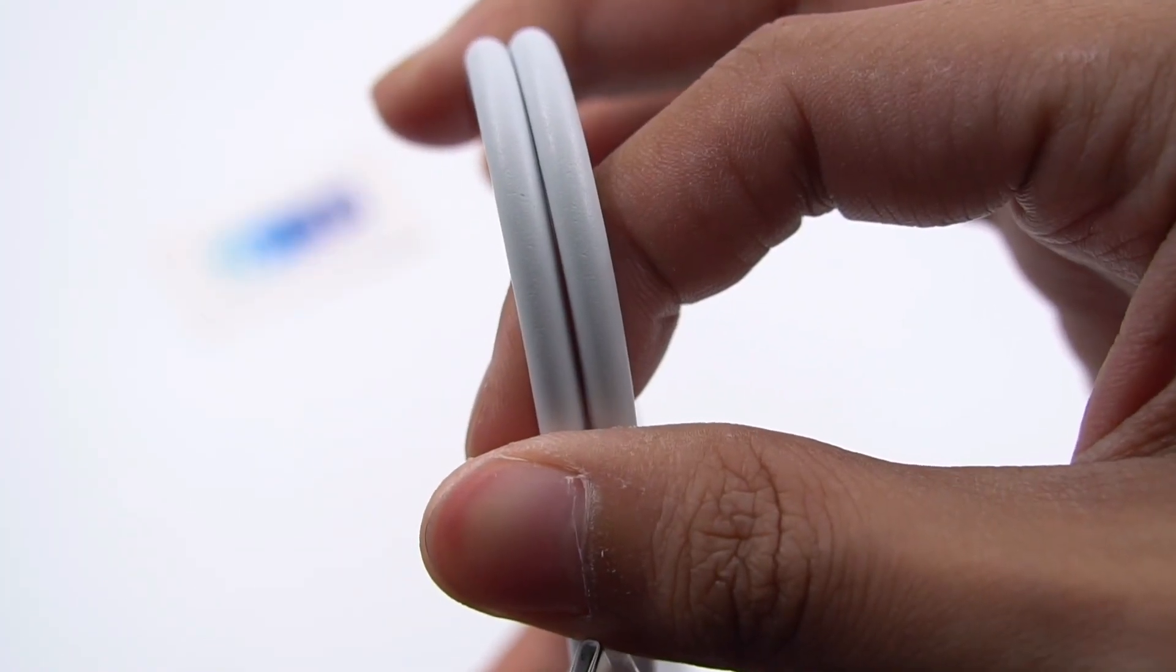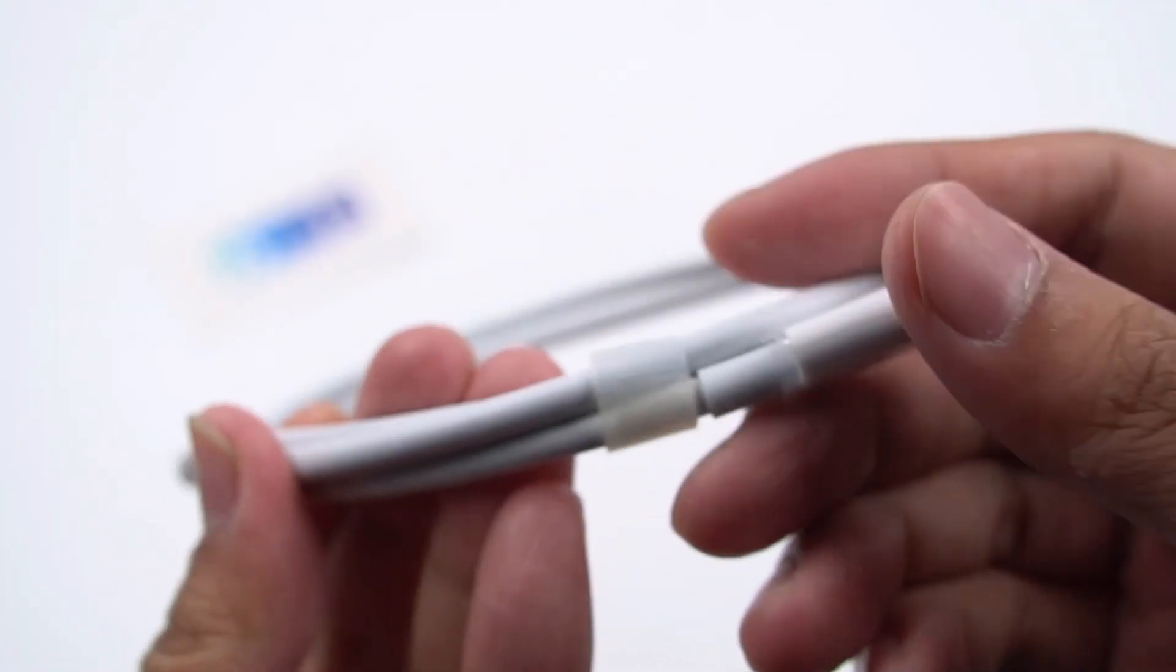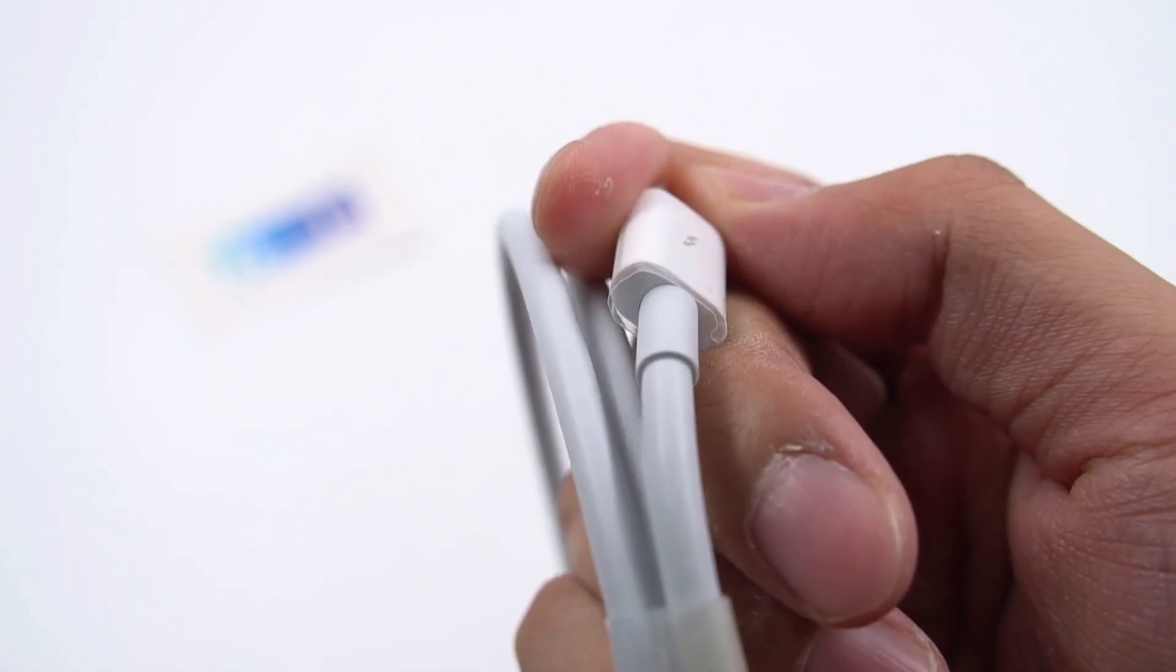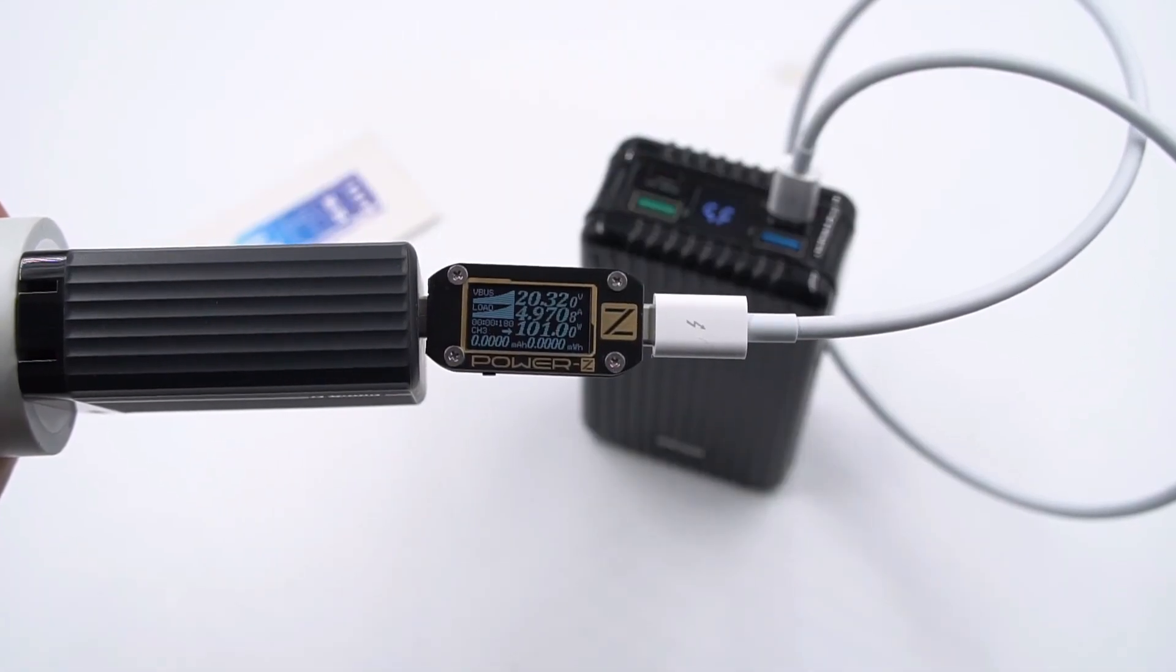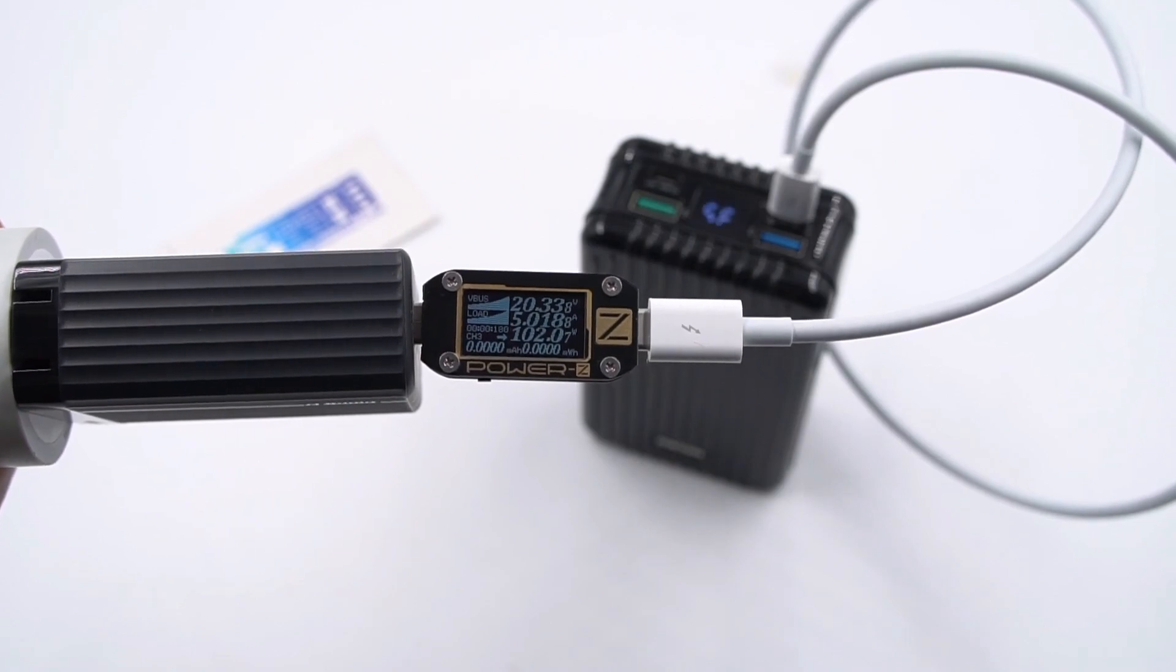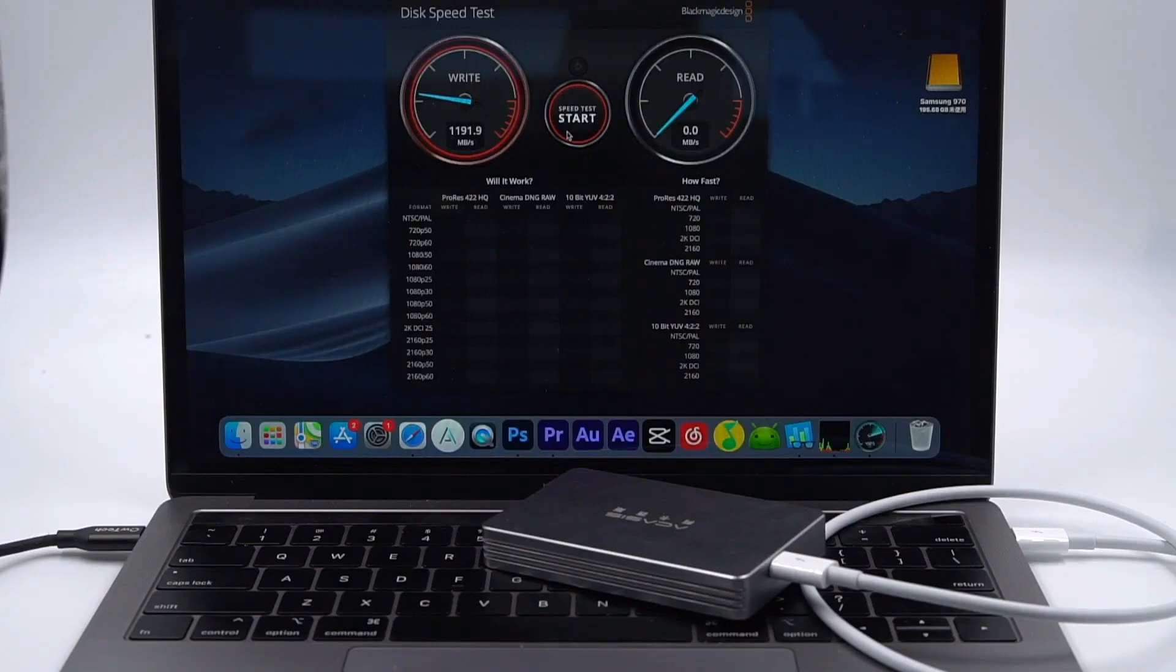Unlike other cables, you can see a lightning logo here. A USB 4 cable is now compatible with Thunderbolt 3. So, in addition to supporting 100W power, the data and video transmission speed can be up to 40Gbps. Pretty nice.